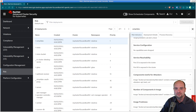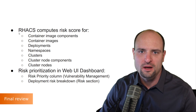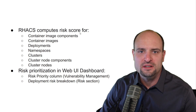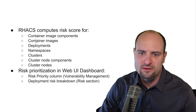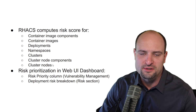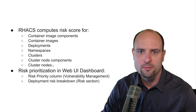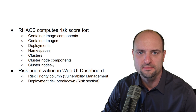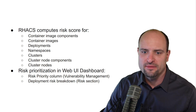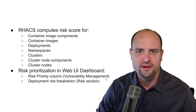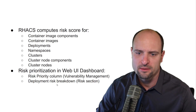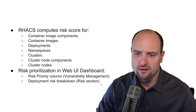Let's review what we covered in this video. We discussed how Red Hat ACS computes risk score for container image components, container images, deployments, namespaces, clusters, cluster node components, and cluster nodes. Based on the risk score, objects are prioritized so the user can focus on the riskiest objects first. In the web UI, the risk priority can be found in the Risk Priority column in the Vulnerability Management section, and for deployments specifically, a risk breakdown is available in the Risk section of the web UI dashboard.